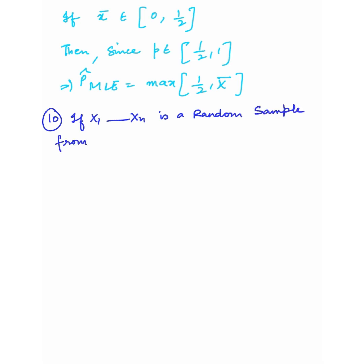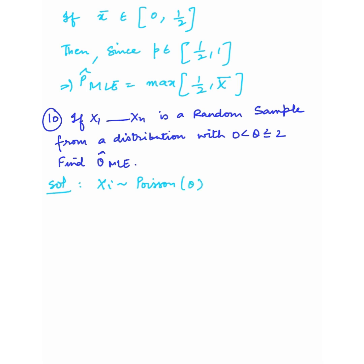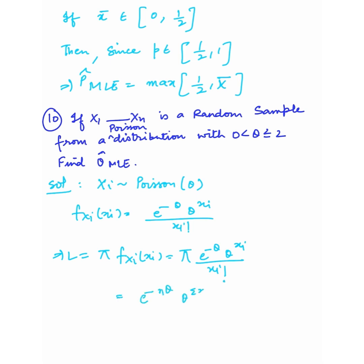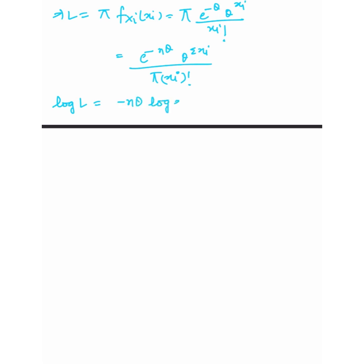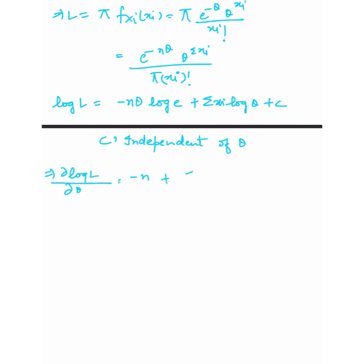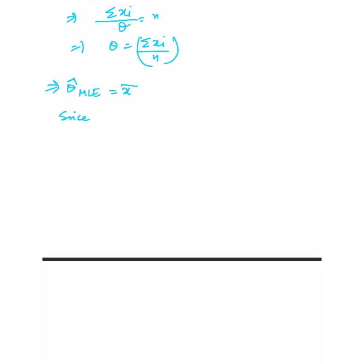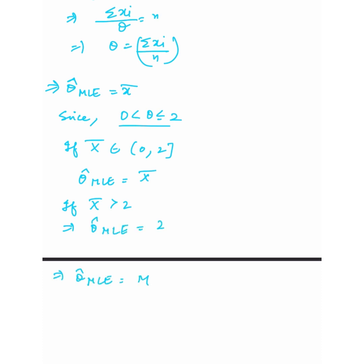Question 10: x1, x2, ..., xn is a random sample from the Poisson distribution with theta restricted from 0 to 2. We write the pdf as e to the power minus theta times theta to the power xi upon xi factorial. Writing the likelihood and log likelihood, then differentiating with respect to theta and equating to 0, gives theta MLE equals x-bar. But since theta is restricted to [0, 2]: if x-bar belongs to [0, 2] we use x-bar as the MLE, and if x-bar is greater than 2, then theta MLE equals 2.